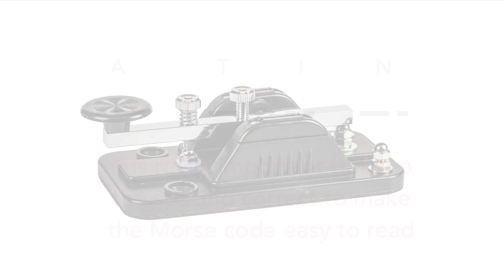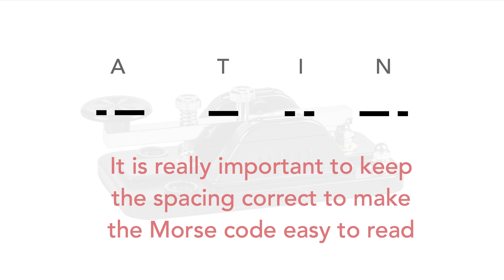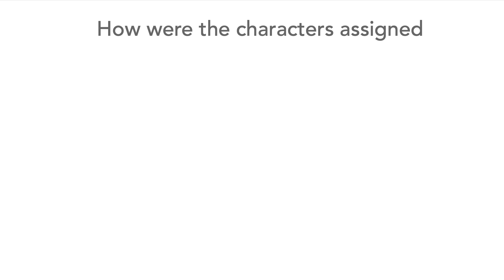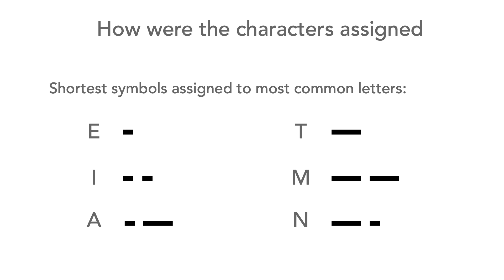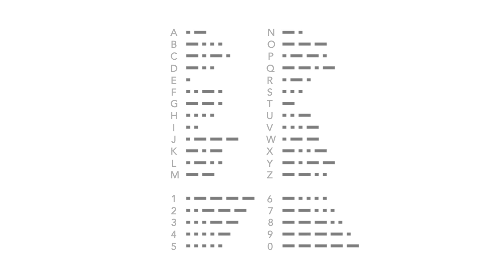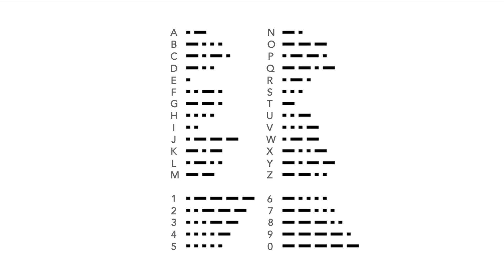It's really important to keep the lengths and spacings all correct as this makes the Morse code very much easier to read. The Morse alphabet was designed so that the more common characters were made shorter and easier to send. For example, the most common letter in the English language is E, and in Morse this is made up from one dot. This type of logic was applied to the whole of the code. The whole alphabet can be seen here with the various combination of dots and dashes for the various letters and numbers.